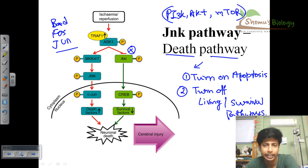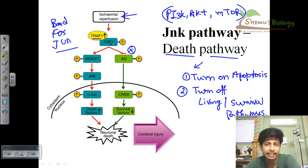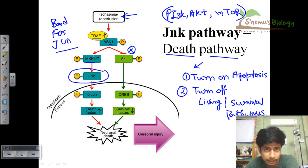The process begins from a particular trigger: the JNK pathway is activated when the cell is under stress — any kind of stress like UV radiation or gamma radiation. Once the cell experiences this stress, it turns on proteins like ASK1. ASK1 is a kinase that begins the cascade. Once ASK1 is phosphorylated and activated, it will further activate MAP kinase kinase kinase (MKK). Once MKK is activated and phosphorylated, it can further phosphorylate JNK.